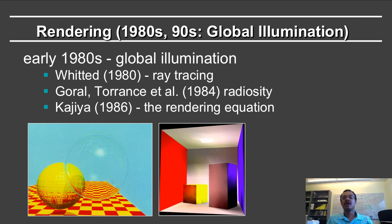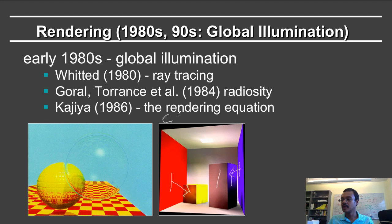The second revolution was in the area of radiosity, wherein you could simulate the interaction between walls and objects. In the famous Cornell Box, developed at Cornell University, the small boxes are made of neutral gray material — all of the color is reflected from the walls. The blue wall reflects energy onto the box giving it a bluish tinge, and the red wall gives it a reddish tinge. This demonstrated diffuse inter-reflection between surfaces.